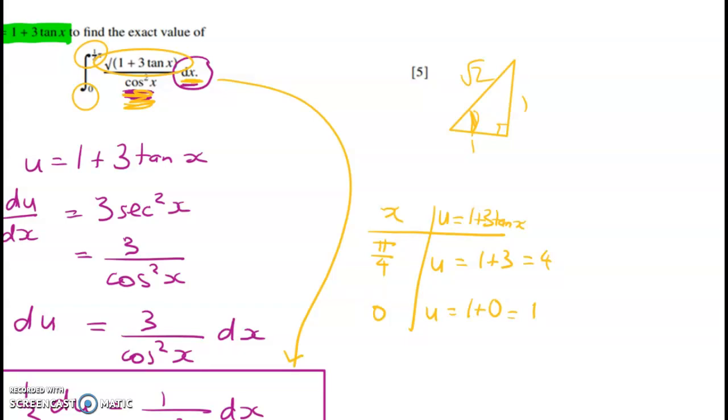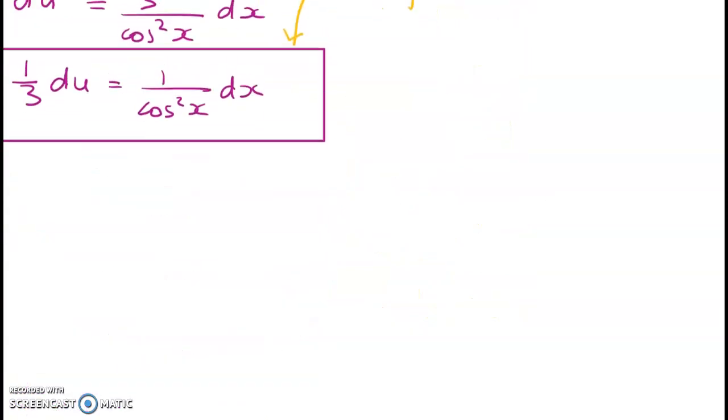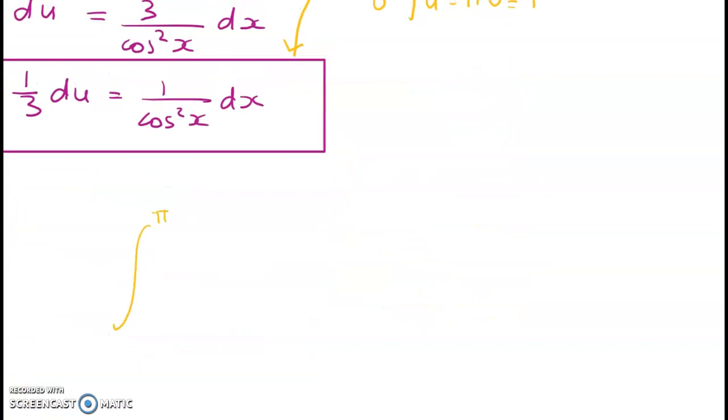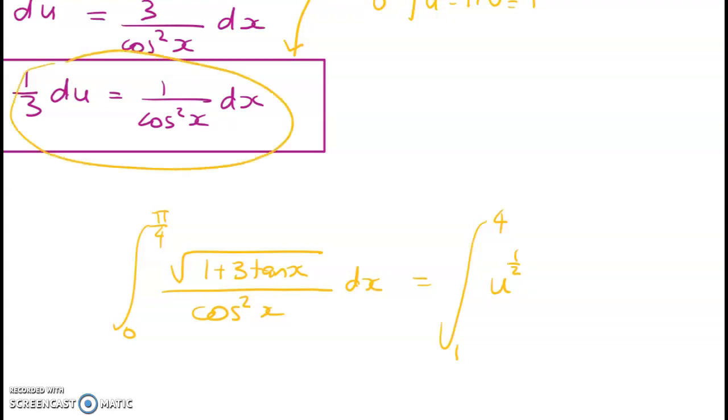Right so now we're ready to do all of our substitution. We're starting out with pi on 4 to 0 and we've got the square root of 1 plus 3 tan x over cos squared x dx. And that is now equal to the integral between 4 and 1 of the square root of u which I'll write as u to the 1 half. And now we've got this ready to swap in, so it's going to be times 1 third du.